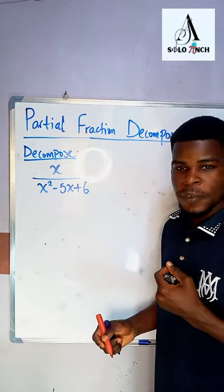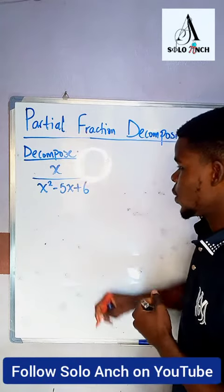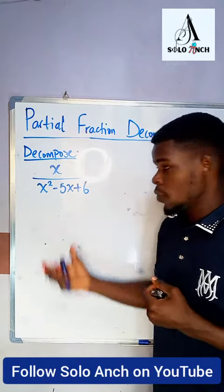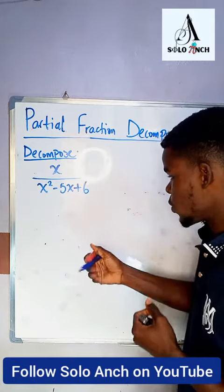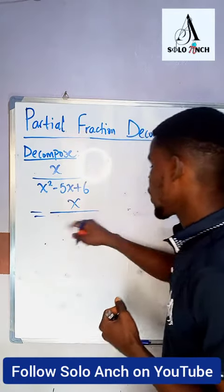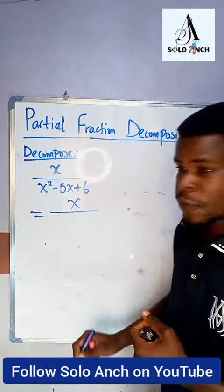Okay, we want to decompose this into its partial fractions. So we have x over x squared minus 5x plus 6. We are going to write the denominator as a product of its factors, so that means we're going to factorize this denominator.